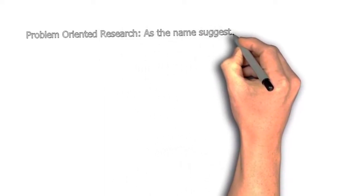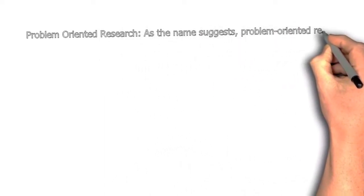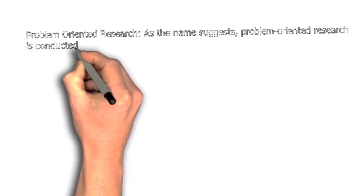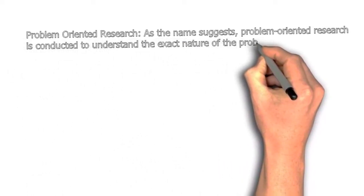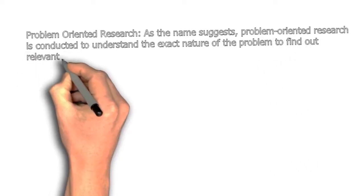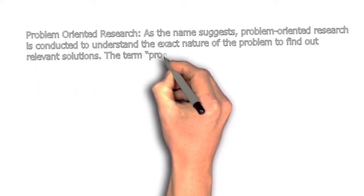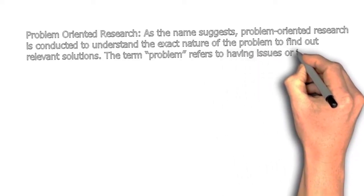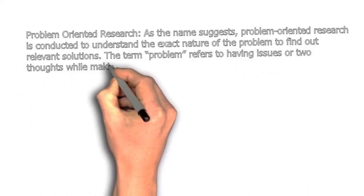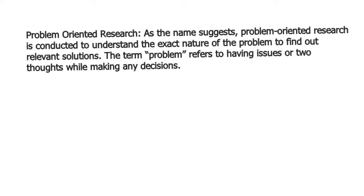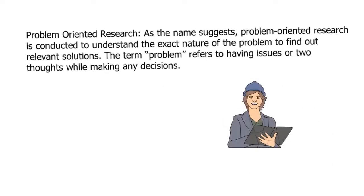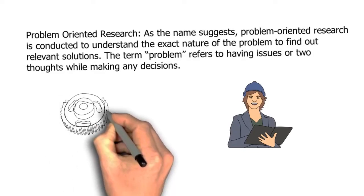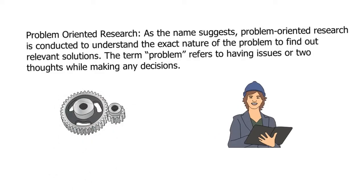There can be problem-oriented research. As the name suggests, problem-oriented research is conducted to understand the exact nature of the problem to find out relevant solutions. The term problem refers to having issues or two thoughts while making any decision. Problem-oriented research will help us in finding a better solution to the existing problem.